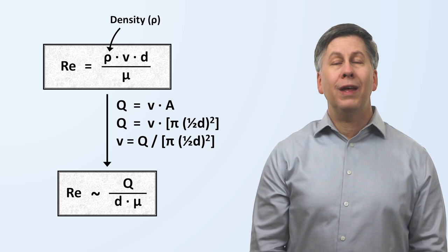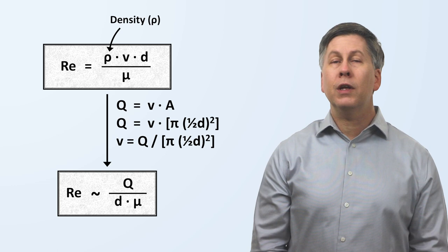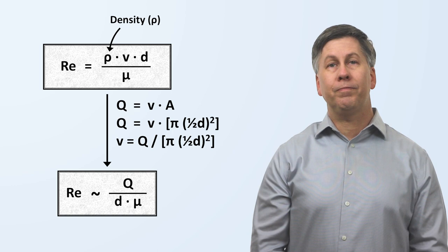So in summary, in the cardiovascular system, turbulence is more likely when flow is high, the diameter of the vessel is narrow, or the viscosity of blood is low.